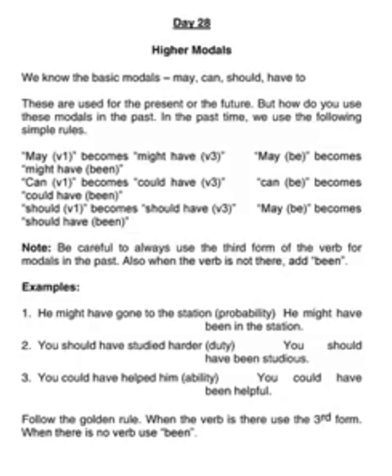So when the modals go in the past, like you are regretting — yesterday you wrote an exam and you didn't write well and you tell your friend, 'I should have prepared.' You can't say 'I should prepare.' That is for the present or the future. But 'I should have prepared' uses V3. When there is no verb in should have, what is added? Should have been.